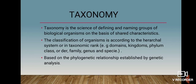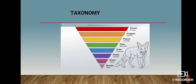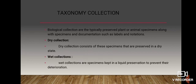Taxonomy is the science of defining and naming norms of biological organisms on the basis of shared characteristics, based on the phylogenetic relationship established by genetic analysis. The taxonomy range goes from kingdom, phylum, class, order, family, genus, to species.